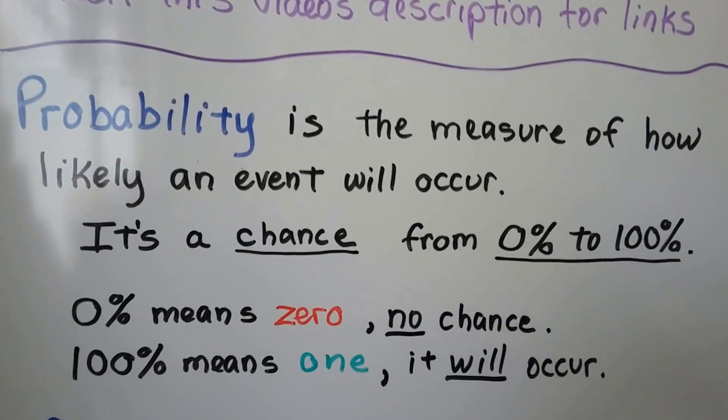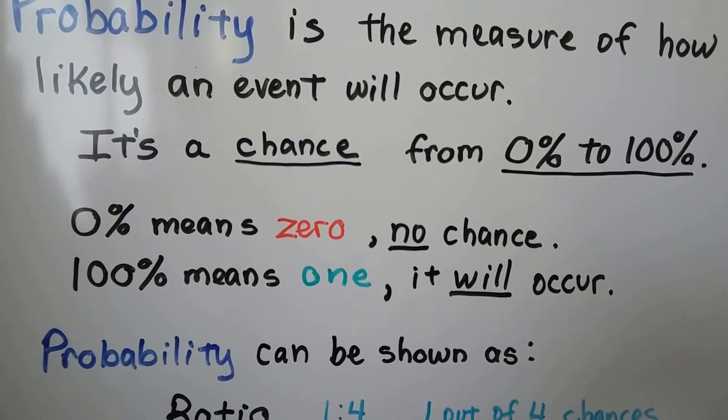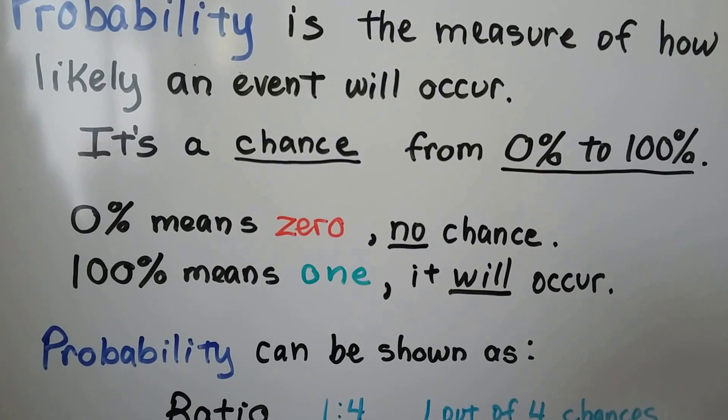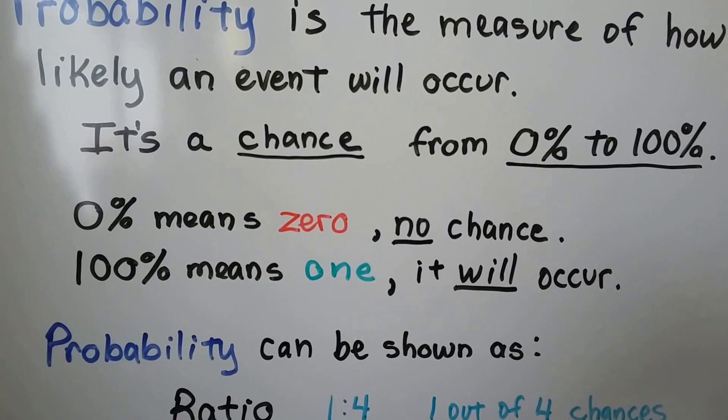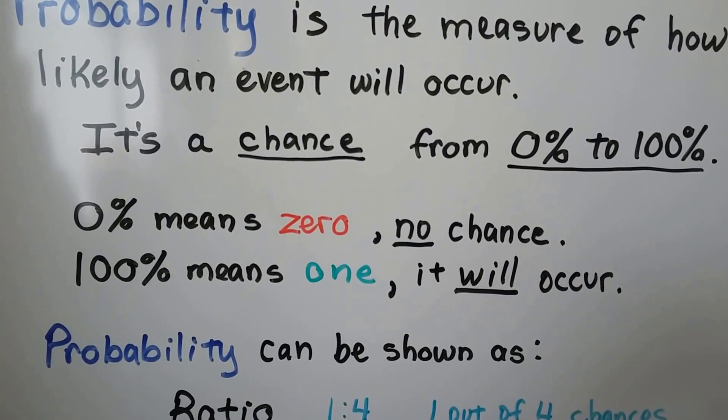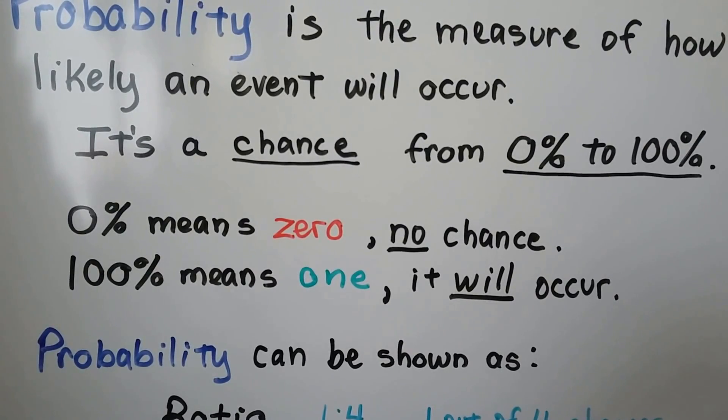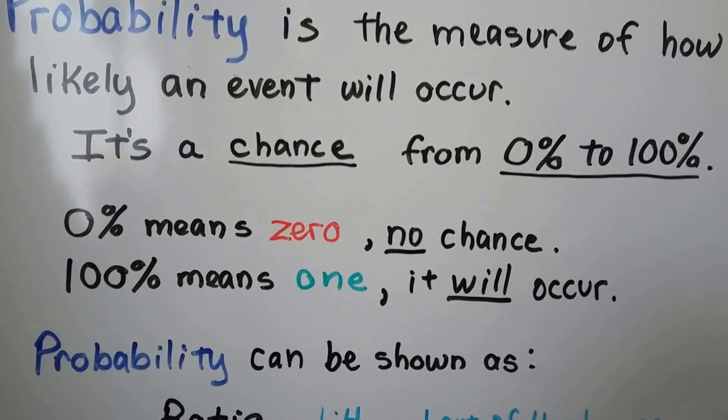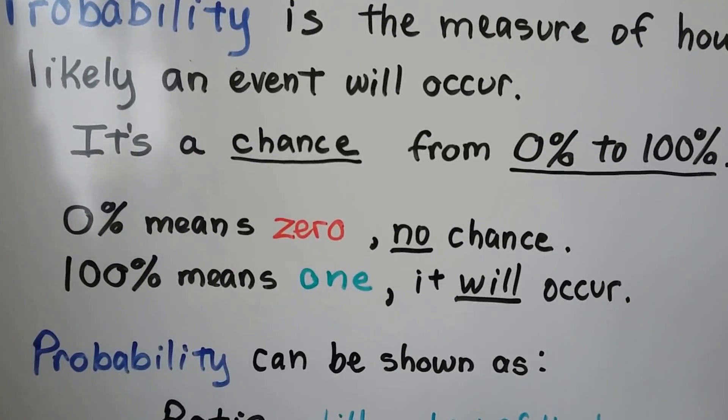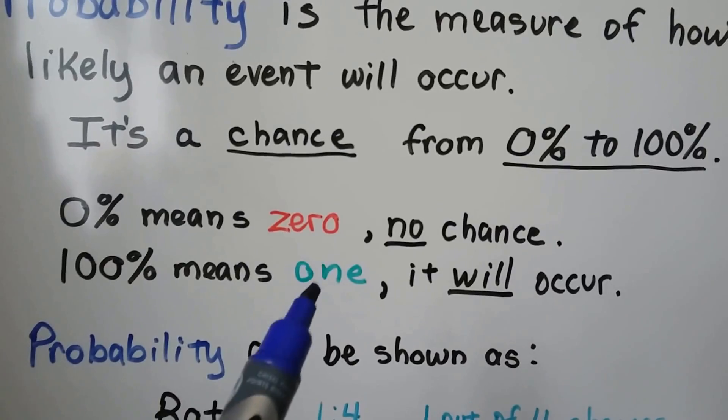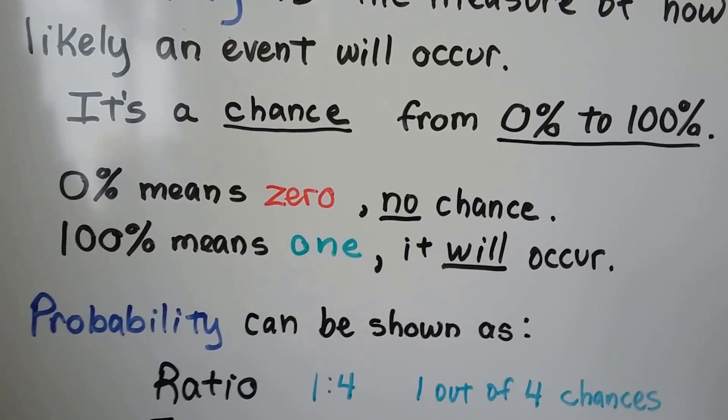A probability is a measure of how likely an event will occur. It's a chance from 0% to 100%. 0% means zero chance, there's no chance that it's going to happen. 100% means one, it will occur, it's certain to happen. So look at it this way. If you have 100% of a candy bar, that means you have one whole candy bar, right? So the probability is represented as a 0 to a 1, and all the decimals and fractions in between a 0 and a 1, or 0% to 100%.